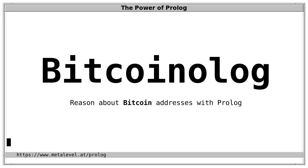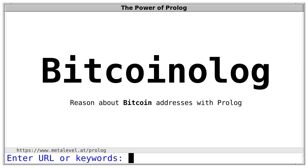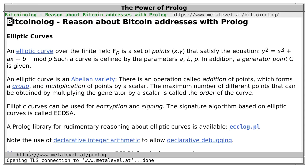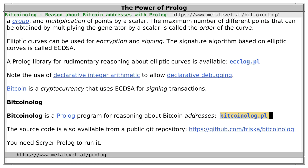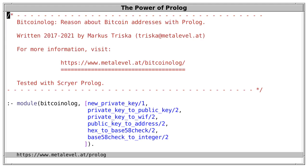Let's use Prolog to reason about Bitcoin addresses, public keys and private keys. First, we go to the project page, and from there we download the Prolog source file. Once we have this file, we consult it with Scryer Prolog and we are ready to generate a new Bitcoin address.